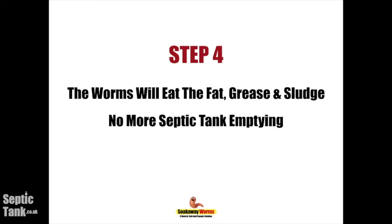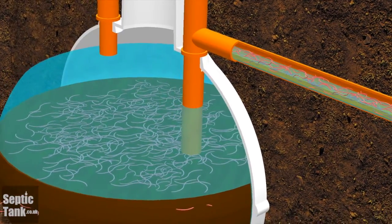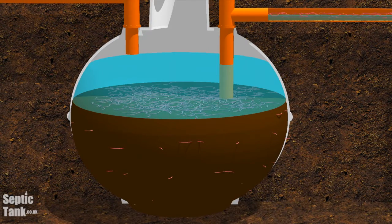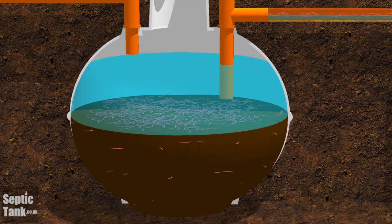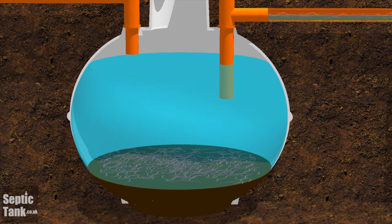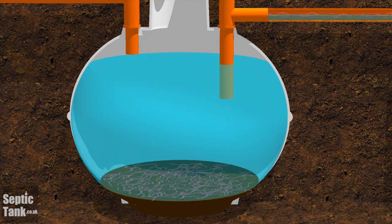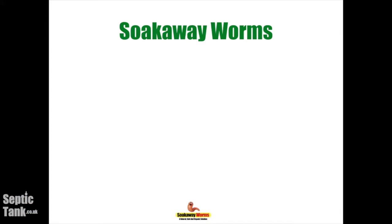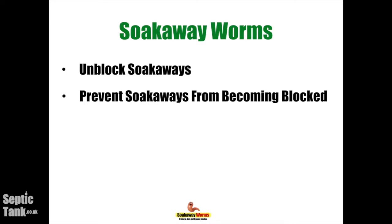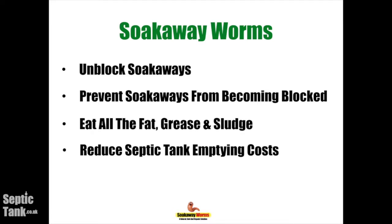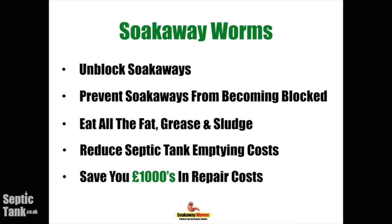Soakaway worms will also unblock and clean your septic tank. Since sludge is the main reason you have to get your septic tank emptied once a year, the worms remove all that fat, grease, and sludge and keep it clean — meaning you'll never have to get your septic tank emptied or desludged again. Soakaway worms unblock soakaways, prevent them from ever becoming blocked again, completely reduce septic tank emptying costs, and save you thousands in repair costs.